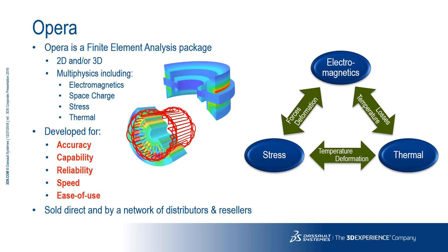Opera is finite element analysis software, available for problems in two or three dimensions. It's capable of multi-physics analyses with stress and thermal solvers available, as well as the main functions of electromagnetics and space charge. It was originally developed for analysis of high field, high homogeneity magnets, so the primary focus has always been on accuracy.